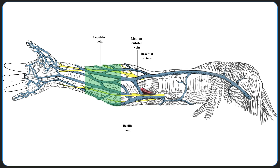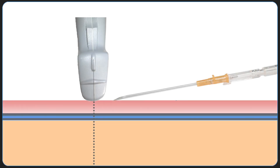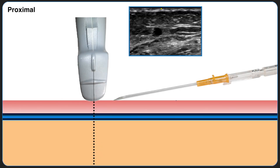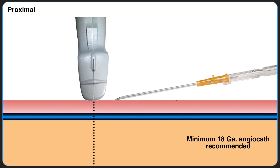The preferred site for ultrasound-guided IV placement is the cephalic vein in the mid- to distal forearm. The cephalic vein runs a relatively consistent, linear, and superficial course through the anterolateral aspect of the forearm. In this animation, we're going to demonstrate the steps in this technique. To start, the approximate center of the transducer is positioned over the center of the vessel. The angle of the angiocath at skin entry is ideally between 15 to 45 degrees, depending on the depth of the vessel.